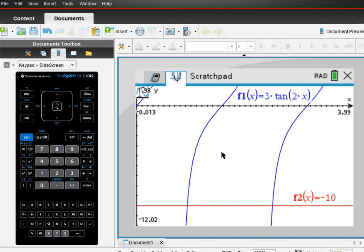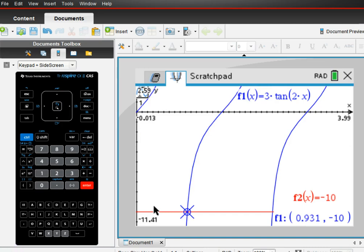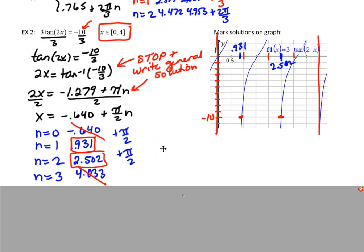If I trace, I can just type in my solutions that I had: 0.931. So we see that lands right on where y is negative 10. And 2.502. That also gives us negative 10. I think I've typed in something slightly different. 2.502. So I must have rounded a little bit on that one, but I got negative 9.99, so I was fine with that one as well.